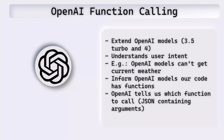Before looking into the code, let's understand what function calling is, and then once we've got that understanding, we can see how we are using that in the code. We can think of function calling as extending OpenAI models to give more functionality. The way it works is whenever we ask a question, it understands the intent of the user, and based on that, it tells us which function to call.